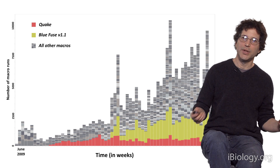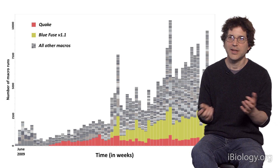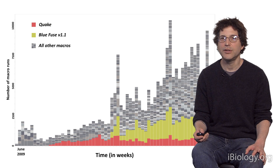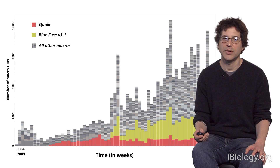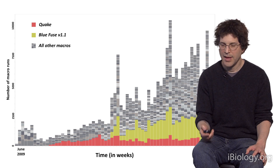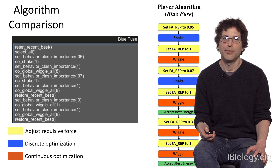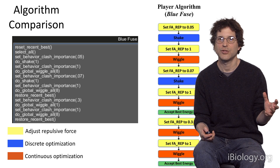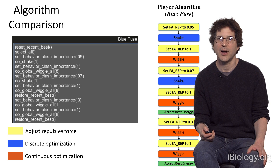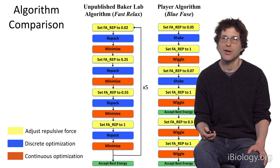Some Foldit players are very public-spirited and make their recipes generally available to the community, while others keep them for themselves. As you'd expect, the people who share get more uses. We noticed that two recipes in particular — shown in red and green on the slide — were becoming very, very popular in the community. We were curious about what these were, and the actual recipe for one of the most popular, called BlueFuse, is shown in the box.